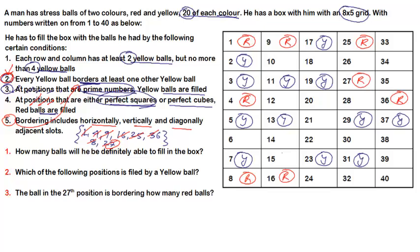Now we can apply condition 2, which says every yellow ball borders at least one other yellow ball. We have completed conditions 3, 4, and we understand what bordering means from condition 5. So effectively we use conditions 1 and 2 to fill all the remaining slots. Condition 1 says each row and column has at least 2 but not more than 4 yellow balls.